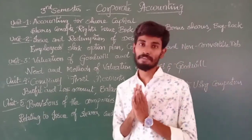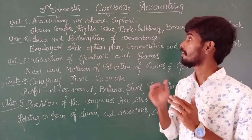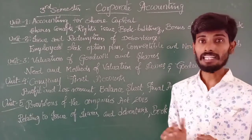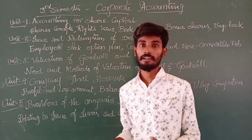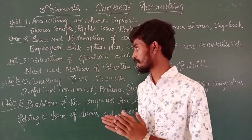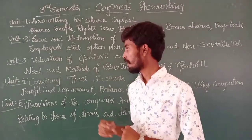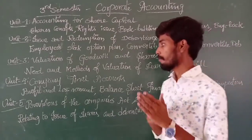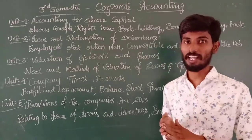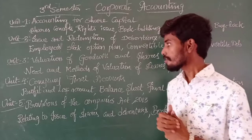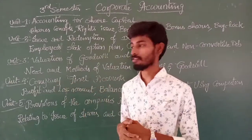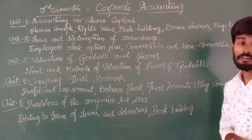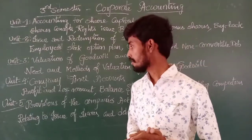Coming to the fourth unit: company final accounts. The ultimate aim of corporate accounting is to finalize the accounts of companies. Generally we already know the types of final accounts — profit and loss account, balance sheet, and trading accounts. Likewise, in company final accounts also, we have profit and loss account and balance sheet, as well as final accounts prepared through computers.